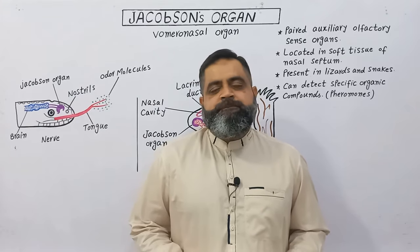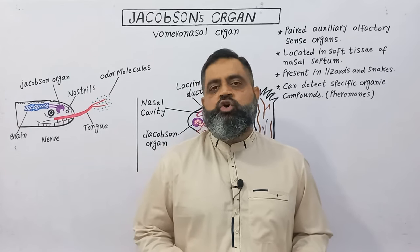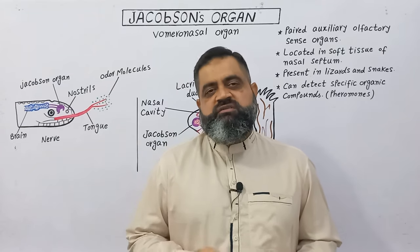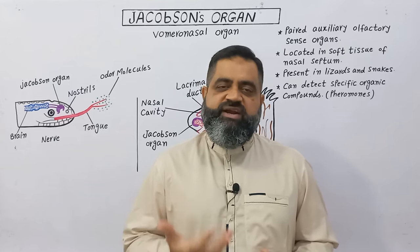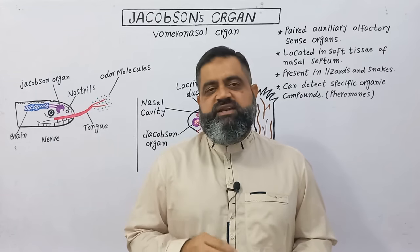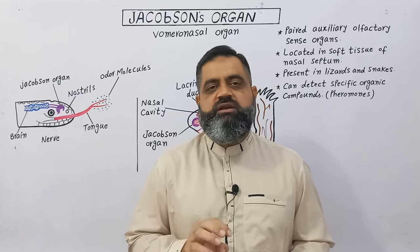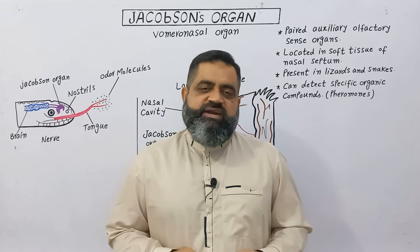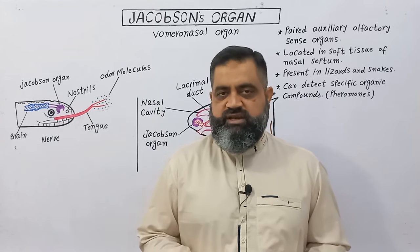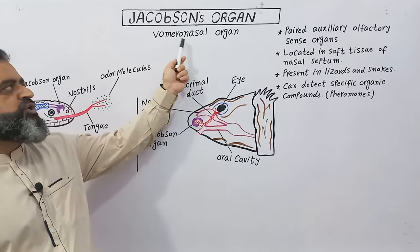Hello to all students. In this video lecture we are going to discuss Jacobson organs. Jacobson organs are specialized organs which are used for olfactory purpose, for smelling purpose in certain vertebrates like lizards, snakes and mammals. But these organs are mostly active in lizards and snakes. These are olfactory sense organs present inside the nasal cavity of these animals. These Jacobson organs are also known as vomeronasal organs.